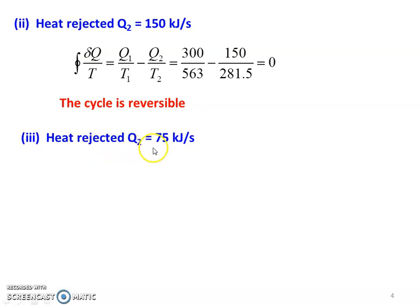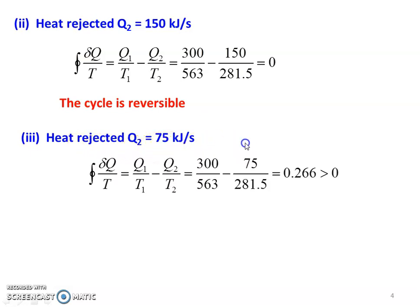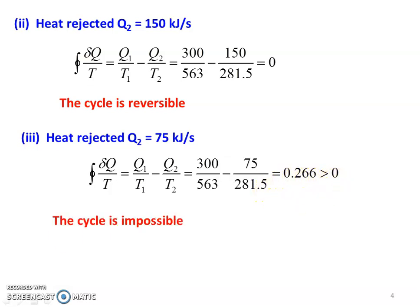For the third subdivision, heat rejected Q2 equals 75 kilojoules per second. The cyclic integral of δQ/T equals 300/563 minus 75/281.5, which equals 0.666, greater than 0 — the cycle is impossible. Summary: δQ/T equals 0 means reversible; δQ/T less than 0 means irreversible; δQ/T greater than 0 means impossible.